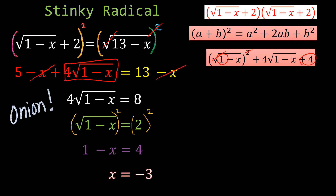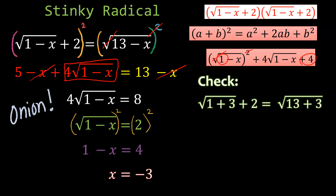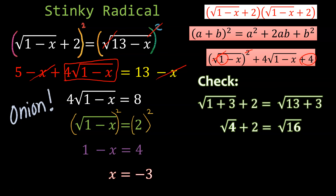Let's check the answer before boxing it. Plug in negative 3: 1 minus (negative 3) is 1 plus 3, so square root of 4 plus 2 equals square root of 16. On the left side: 2 plus 2 = 4, and on the right side: 4. The answer checks out.